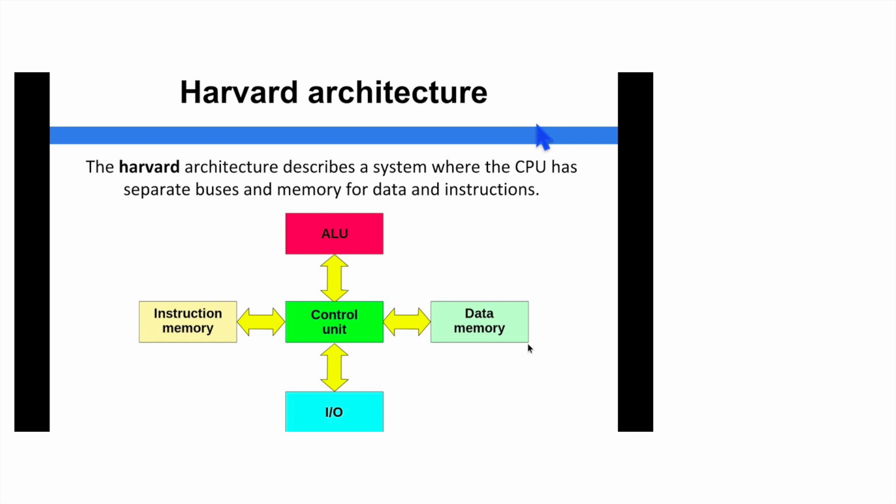There are two kinds of computer architecture. One is von Neumann, where we have a single bus to access both data and instruction. But in Harvard architecture, there are separate buses given for data and instruction. So at the same time we can fetch data as well as the instruction from instruction memory.